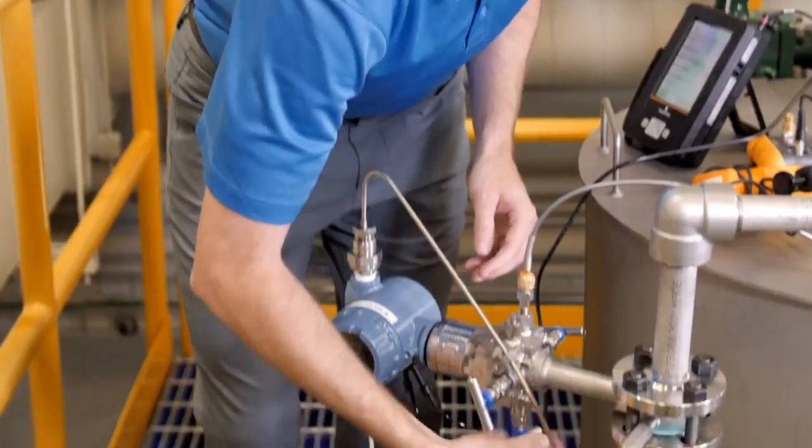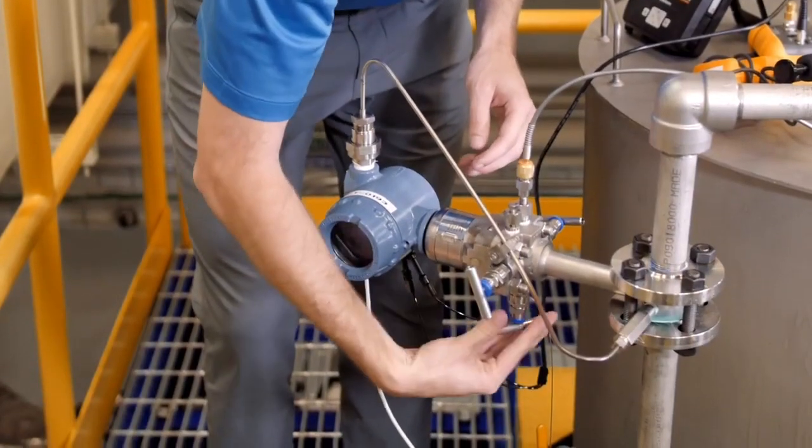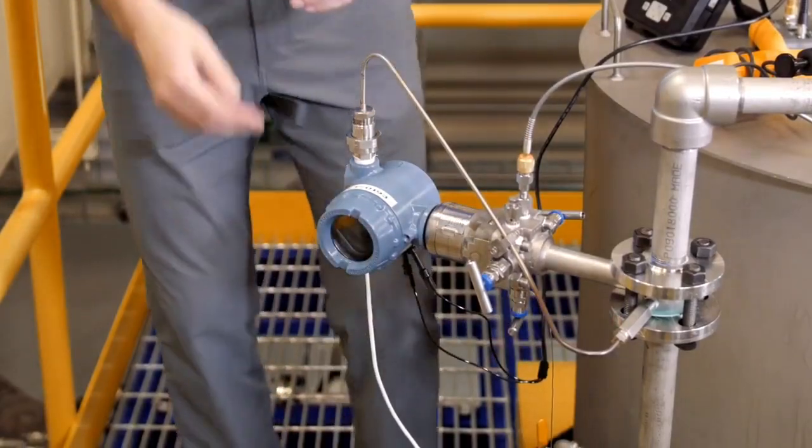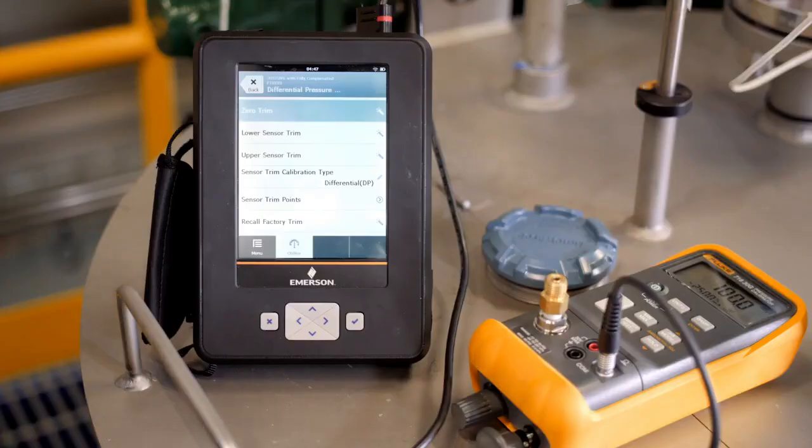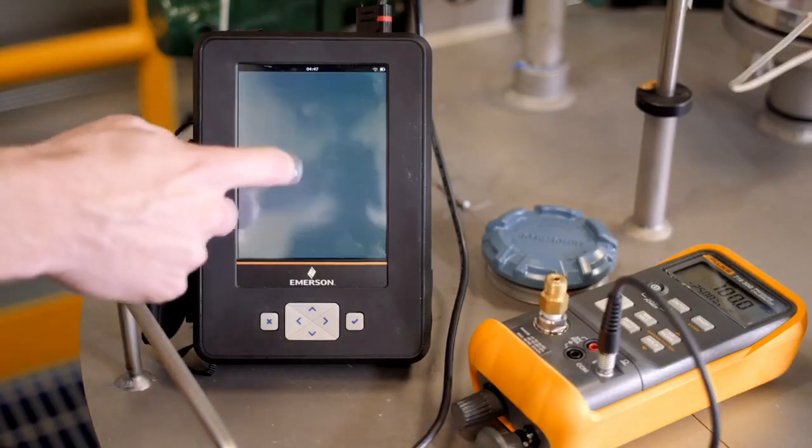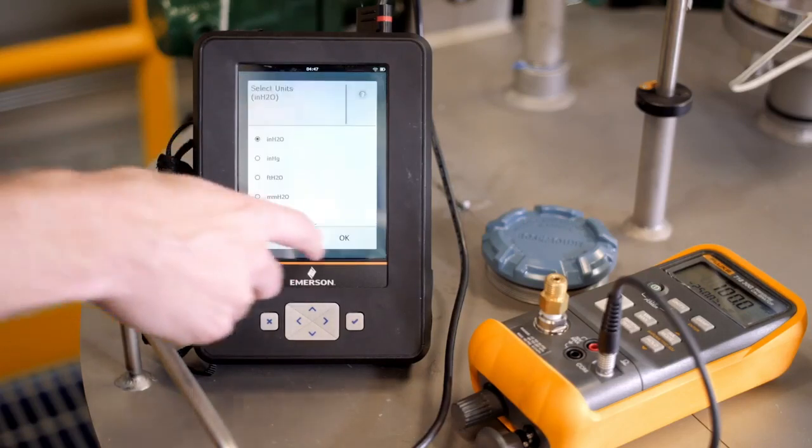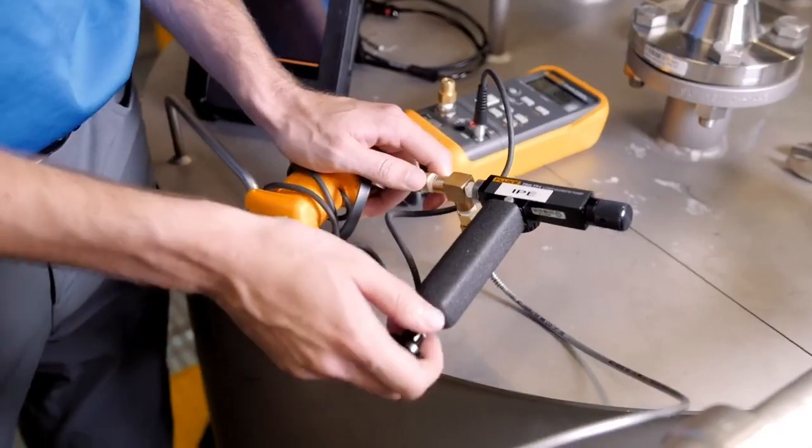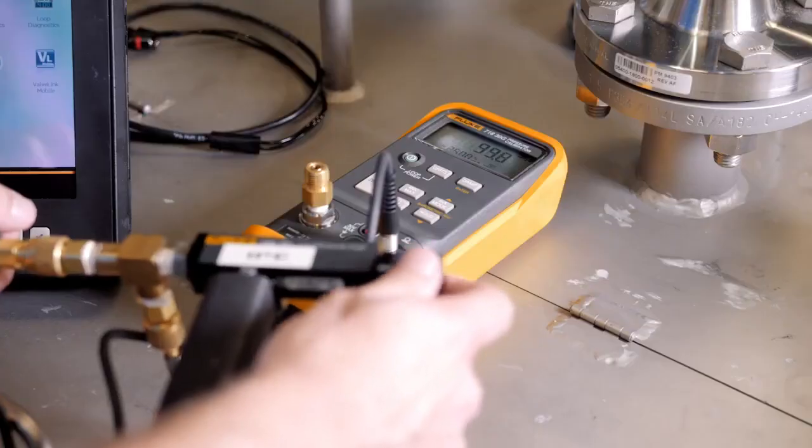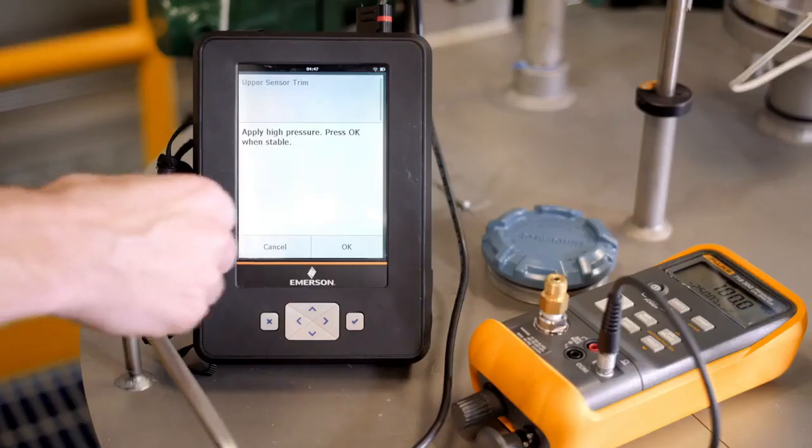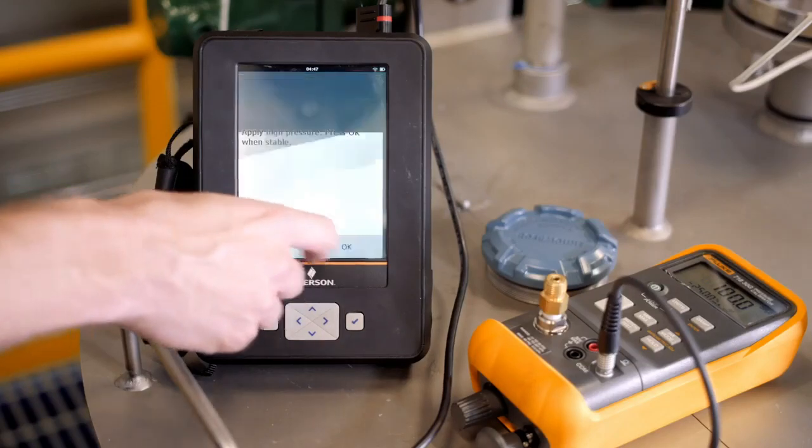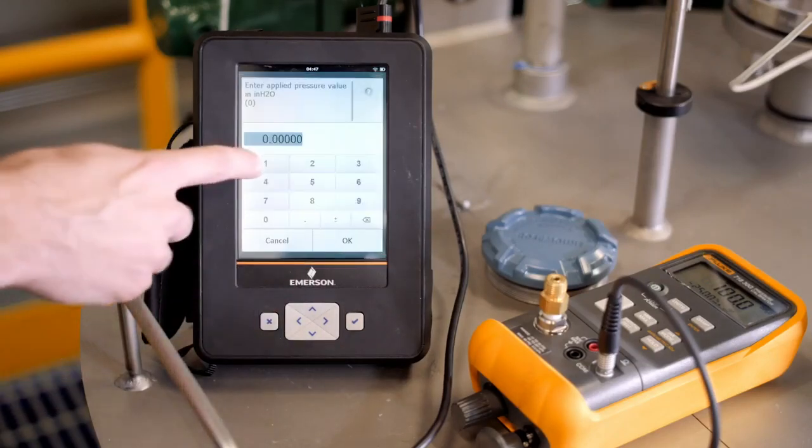The next step is to perform an upper sensor trim, which should be calibrated to the transmitter's upper operating limit. The valve should also be manipulated so that the high side is connected to a pressure source. Now select upper sensor trim. The first thing to choose is the units, and then we'll apply pressure to the transmitter. For this example, we'll apply 100 inches of water. Now enter that applied pressure on the Trex and follow the guided wizard to completion.